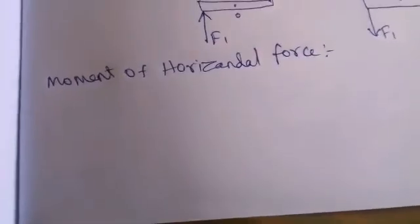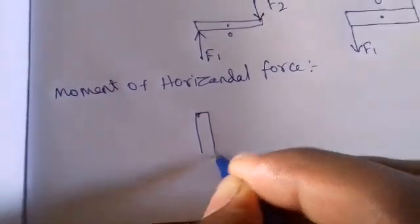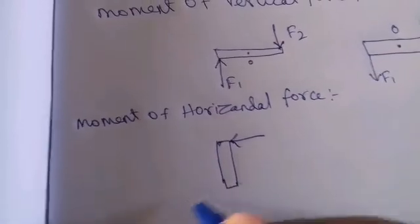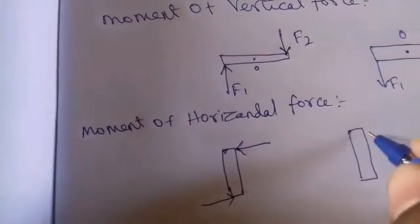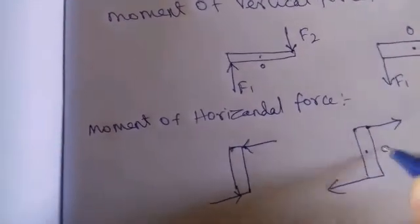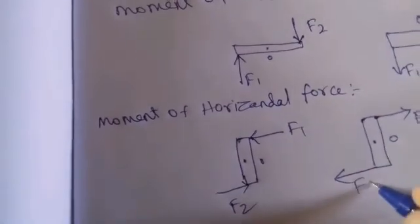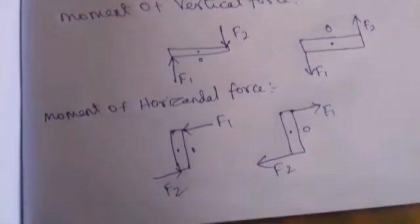Next, moment of a horizontal force. If you have a horizontal force acting on a rod, for example forces F1 and F2 acting horizontally about a point O, these produce clockwise and anticlockwise moments respectively. So both vertical and horizontal forces can produce moments.